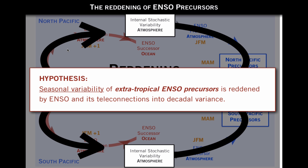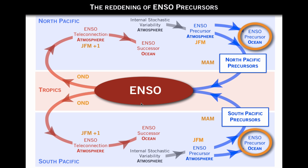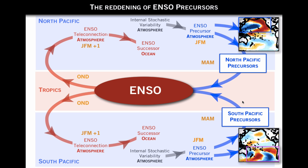So the hypothesis that we'd like to verify is that the seasonal variability in the strength of the extratropical precursor is reddened by ENSO in its teleconnection to actually produce the decadal variance of the basin. To show that, one thing we can start looking at is the oceanic expression of these precursors, and this is very revealing.